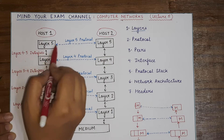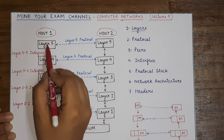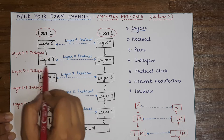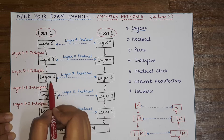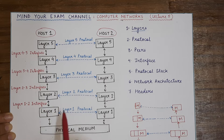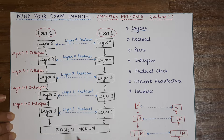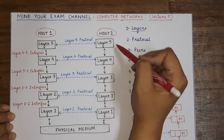Between the layers, double-ended arrows show that communication happens in both directions. For example, if host 1 is a client requesting a web page from host 2, which is the server, host 1 will initiate communication at layer 5. Layer 5 sends the information to layer 4, which performs its functionality, then layer 4 interacts with layer 3, layer 3 with layer 2, and then layer 1. So at host 1, the communication direction is top to bottom.